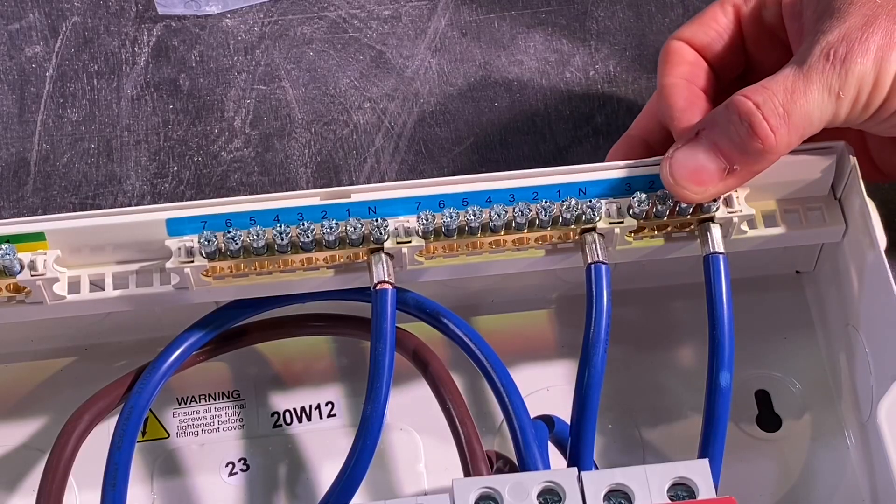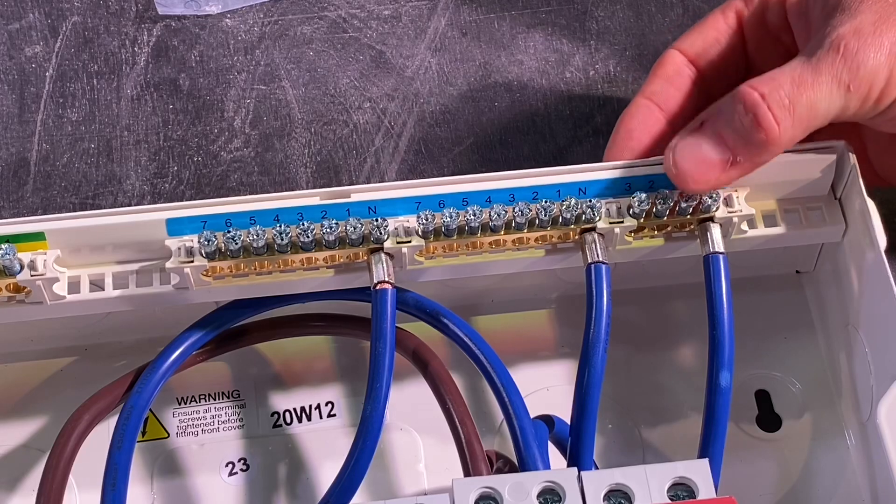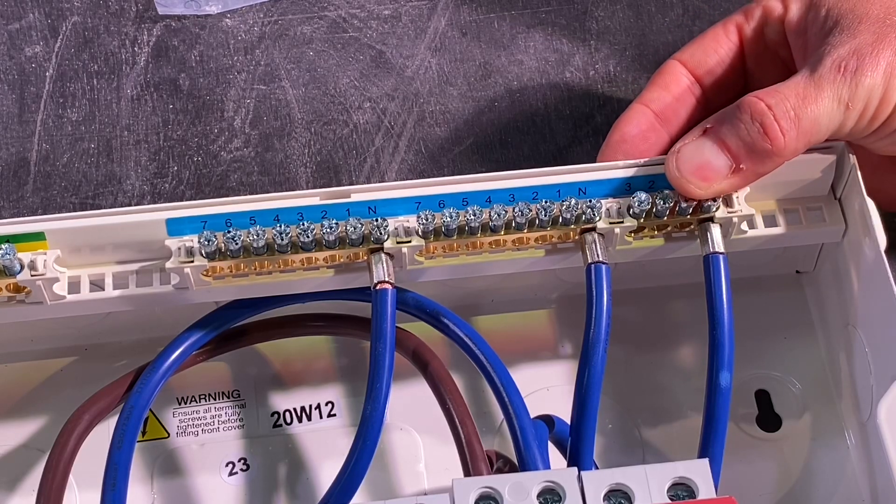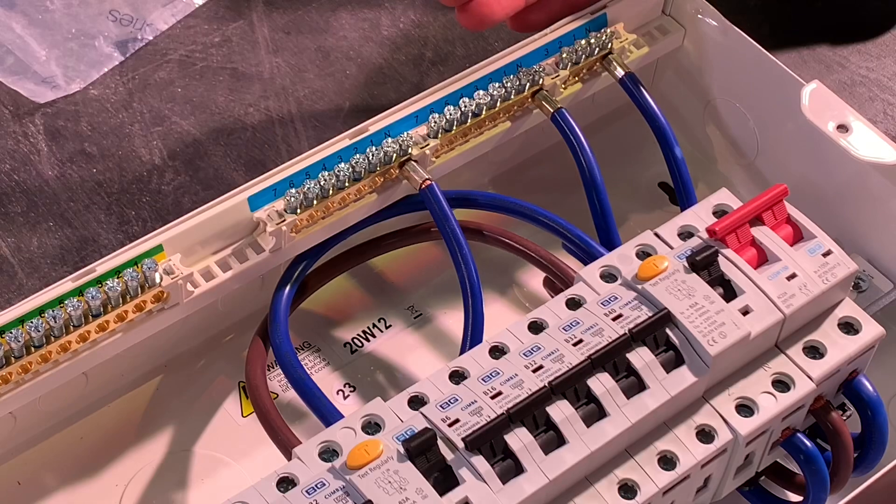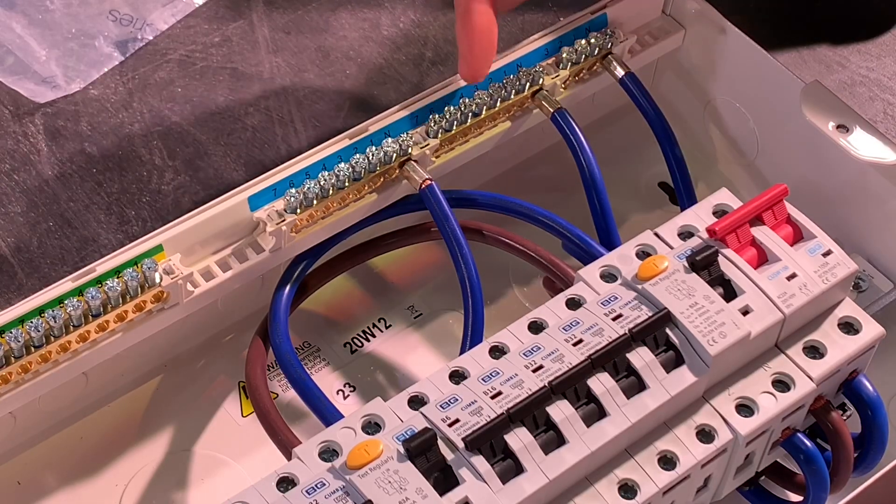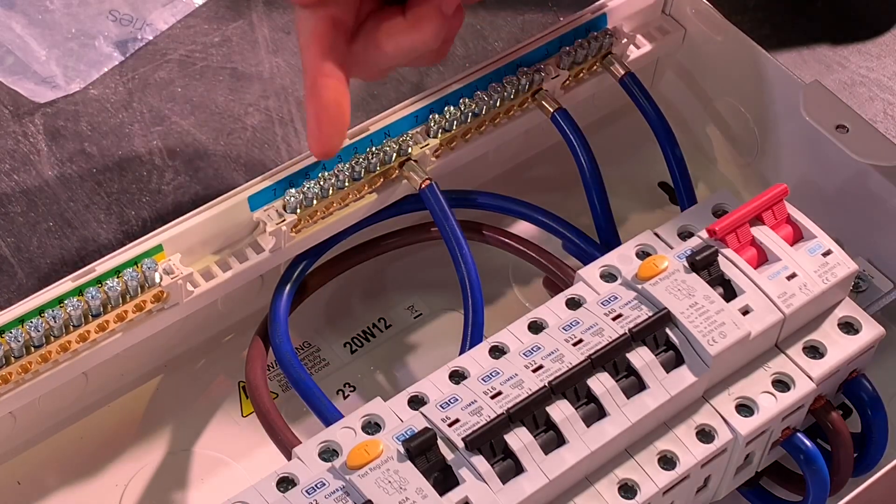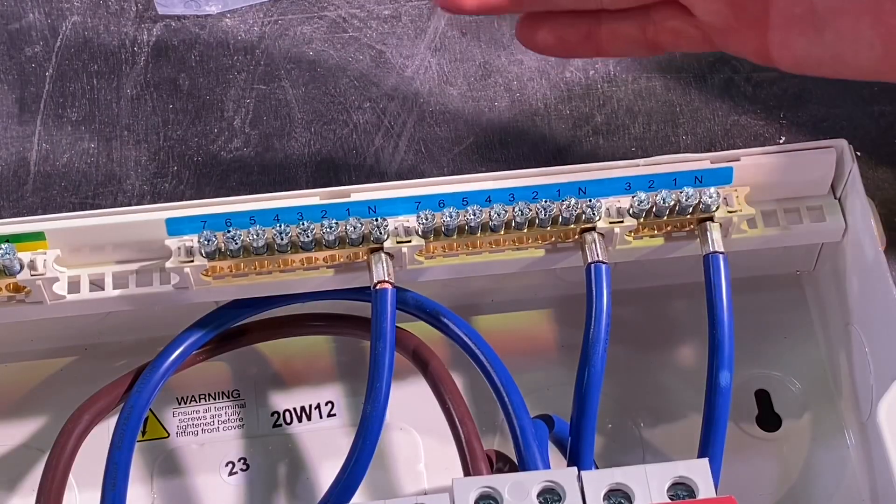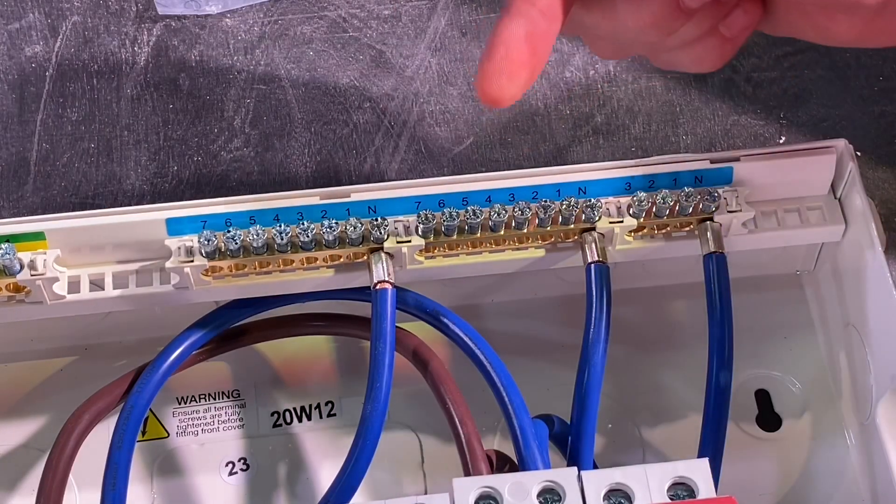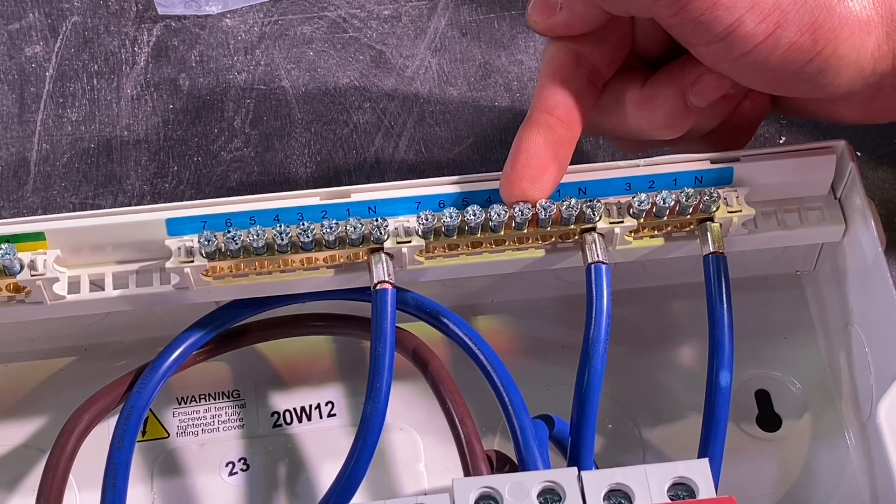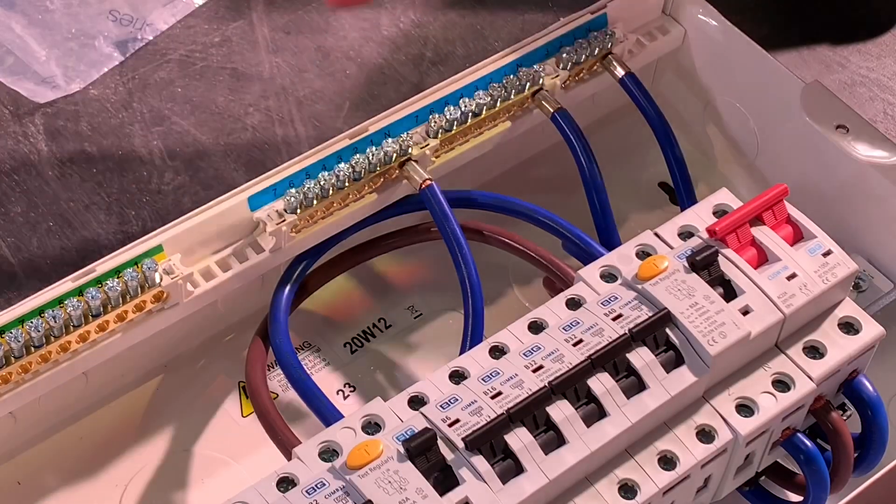We've got a three terminal neutral bar here in case you wanted to rearrange the board to have a high integrity circuit, maybe a steel or armoured feed in another consumer unit. You've got seven neutral connections here and seven here, even though it's a 5-5 split, meaning you could potentially have seven circuits on one of your RCDs and three on the other or mix and match to suit.